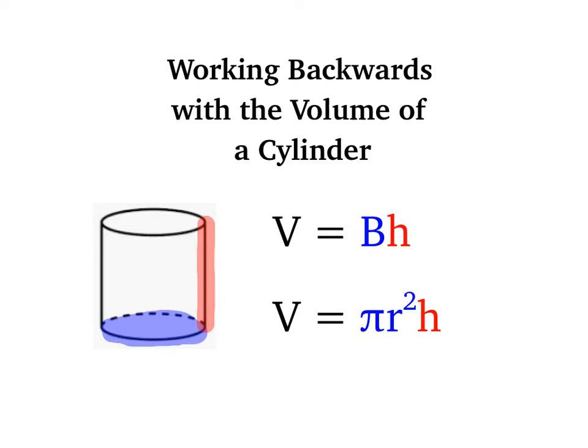For a cylinder specifically, we know that base is always going to be a circle, so we could also look at the formula V = πr²h, where the πr² gives you the area of the circular base.